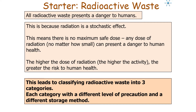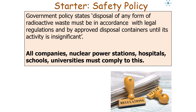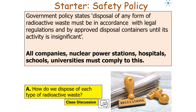This leads us to classify radioactive waste into three categories, each with a different level of precaution and different storage methods: high-level radioactive waste, intermediate-level radioactive waste, and low-level radioactive waste. Most high-level waste comes from nuclear power stations, hospitals using radioisotopes, or specialist universities. UK government policy states that disposal of any radioactive waste must be in accordance with legal regulations and using approved containers until its activity is insignificant — the same as background.